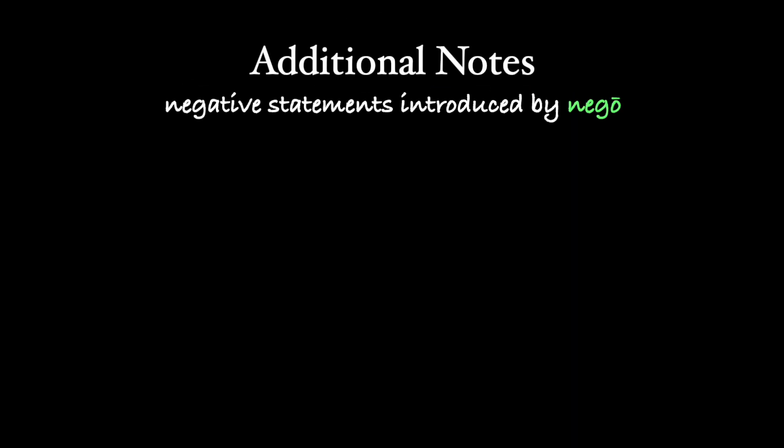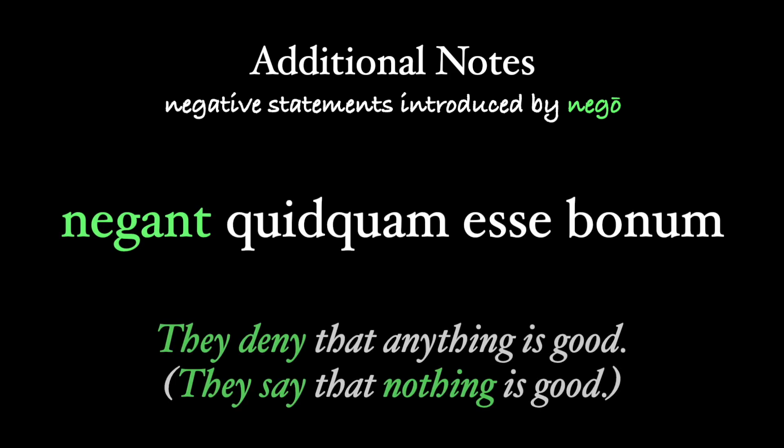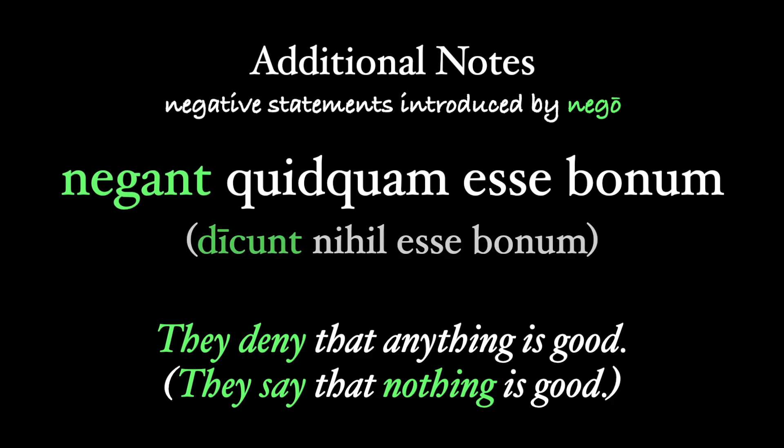A couple more notes about the main clause in an indirect statement. Latin prefers to use the verb nego, "I deny," instead of dico with a negative. So "Negant quidquam esse bonum" — they say that nothing is good (literally, they deny that anything is good) — is preferred over "Dicont nihil esse bonum."